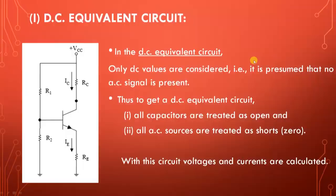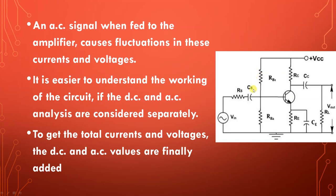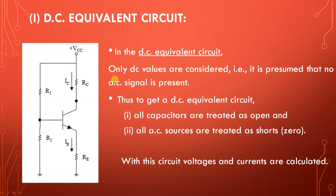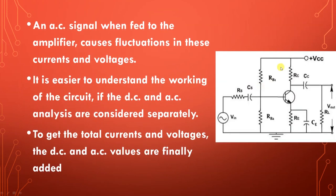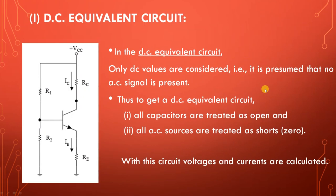In the DC equivalent circuit, we consider only DC conditions — no AC is present. That circuit is called the DC equivalent circuit. In this DC equivalent circuit, this part is the same as the original circuit, re-drawn without AC components. DC equivalent is nothing but the original circuit with AC components not considered.